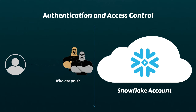Once you pass authentication, the next step is verifying your access privileges. While we'll dive deeper into access and security in a separate video, it's important to understand that in Snowflake, privileges are assigned to roles, and roles are then assigned to users. So when you try to access data from a table, this layer ensures you're on a role with the required permissions for that table.